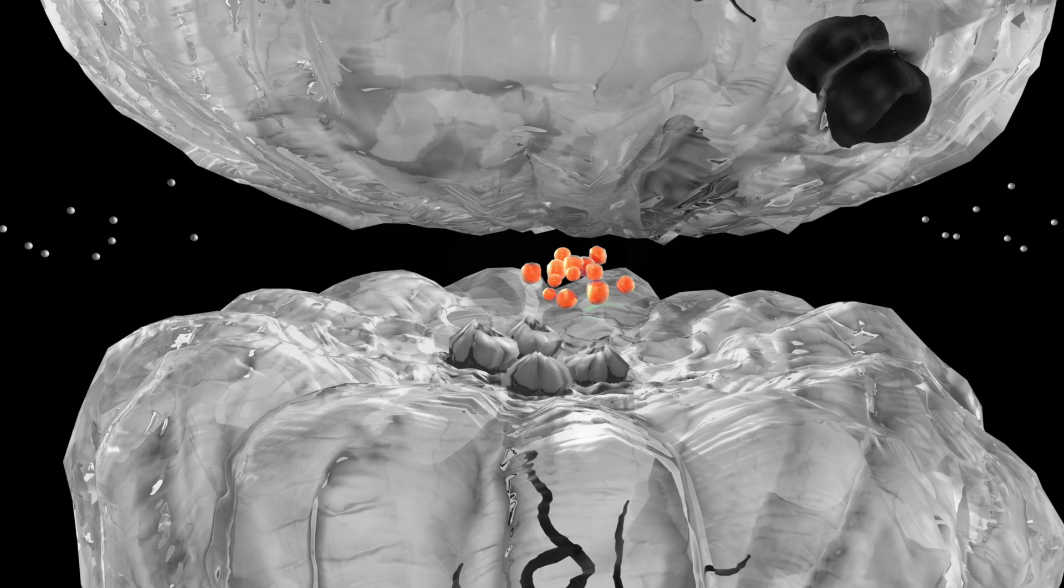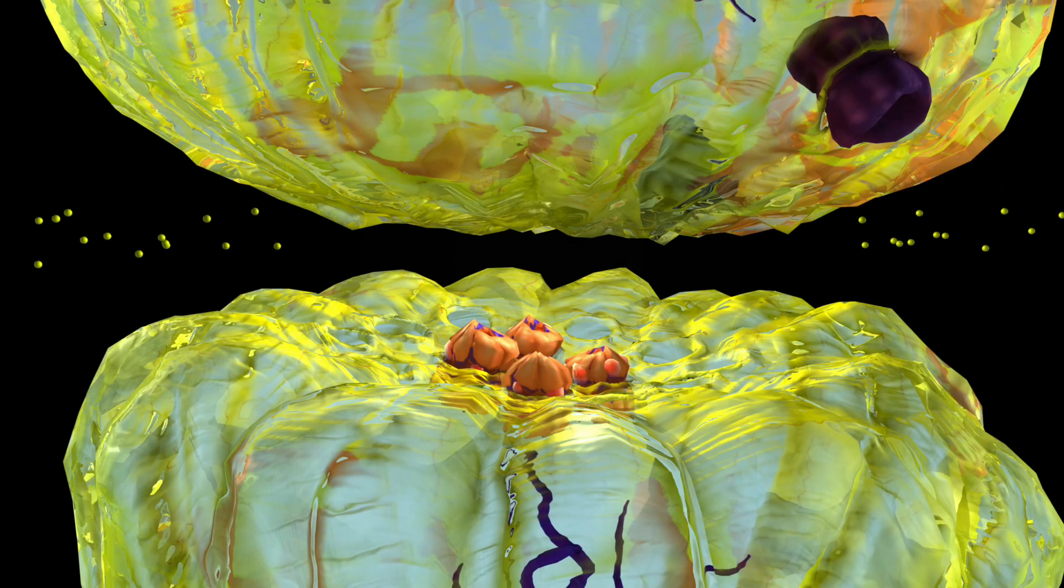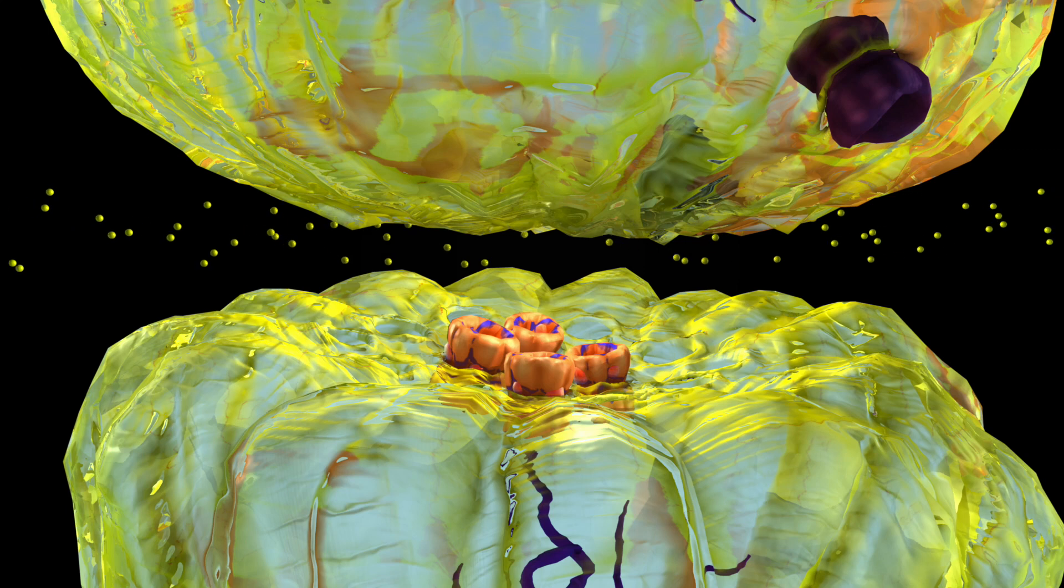This is the neurotransmitter acetylcholine. When acetylcholine binds to the receptor, it opens the receptor and allows sodium to enter.